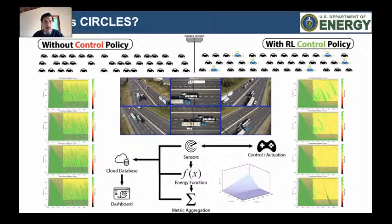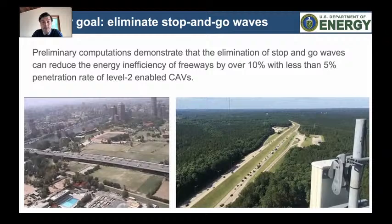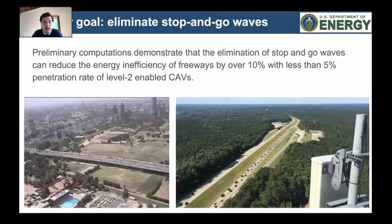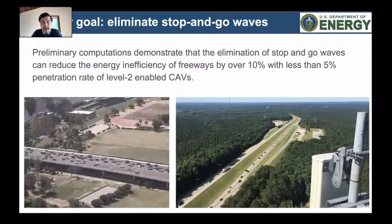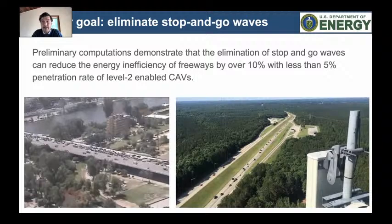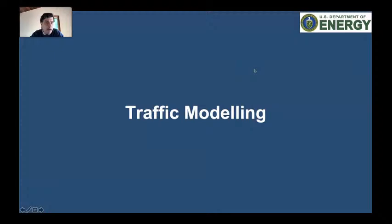The specific circumstances in which these things happen are phantom jams, sometimes referred to as jamitons or stop-and-go waves. You can see two examples — one in Germany and one in Atlanta — where vehicles stop and go with these waves propagating backwards with really no good reason. The notion is: with flow smoothers, level-2 enabled CAVs, could you stop that? Could you shave these oscillations? There's a bit of traffic modeling involved, but the reinforcement learning part kind of bypasses that.